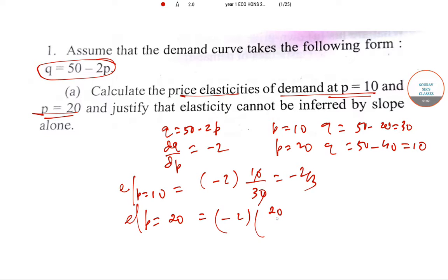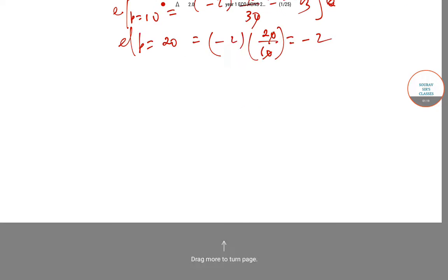The price elasticities are like this: this one is less than one in absolute value, and this one is greater than one.